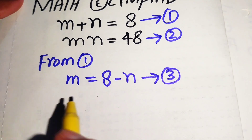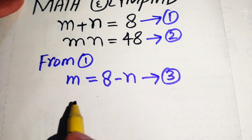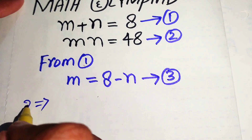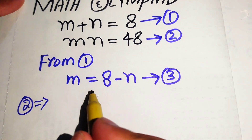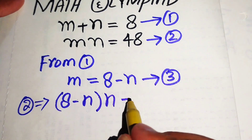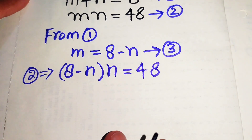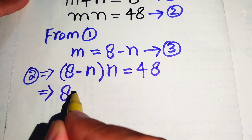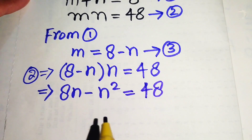Now we focus on equation 2 and substitute the value of m from equation 3 into it. Equation 2 becomes (8 minus n) times n equals 48. Multiplying through, we get 8n minus n squared equals 48.